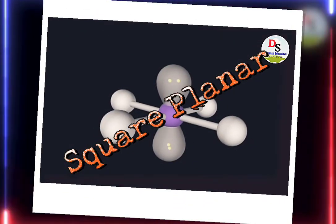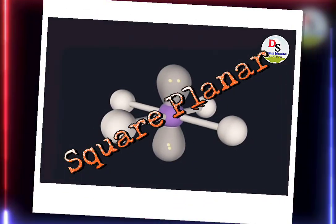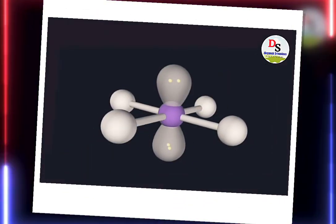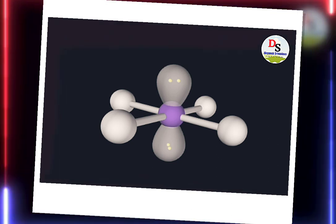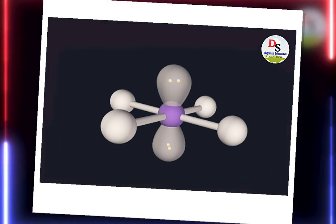It is the square planar structure of a molecule. It has 4 bond pairs and 2 lone pairs.